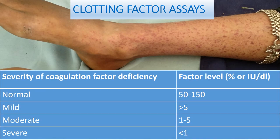The severity of coagulation factor deficiency depends on factor level. Normal is 50–150%. We label mild when factor level is more than 5%, moderate when it is between 1–5%, and severe when it is less than 1%.